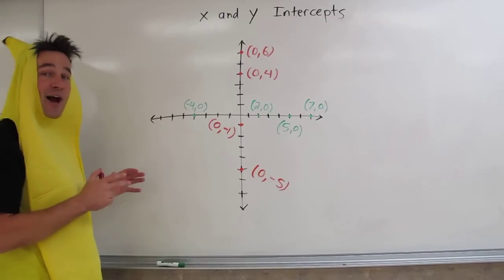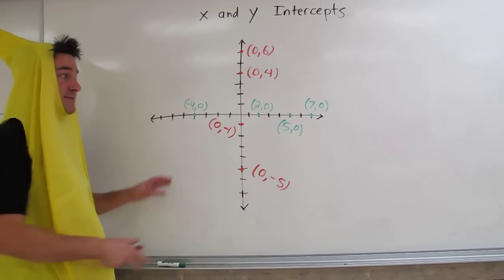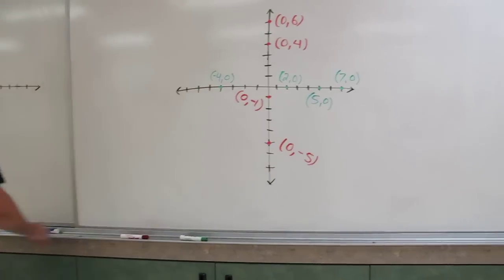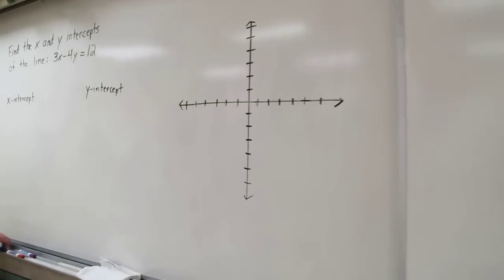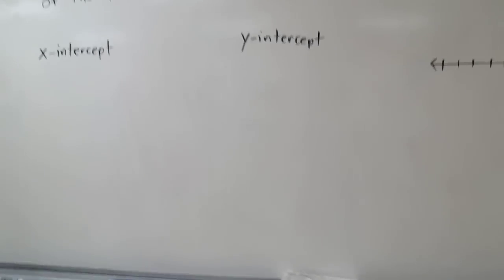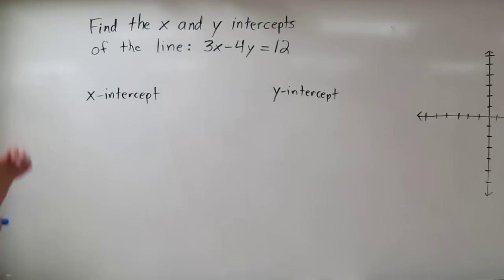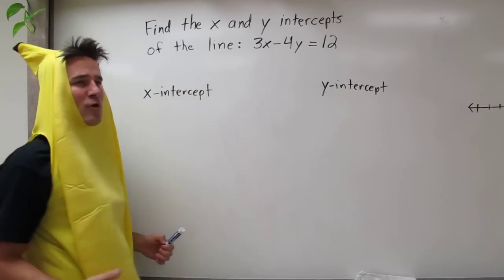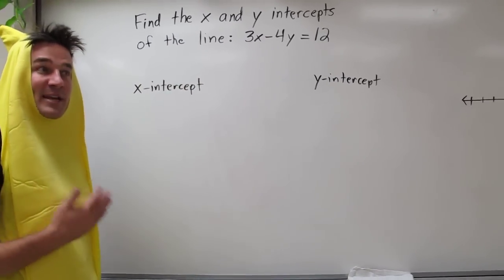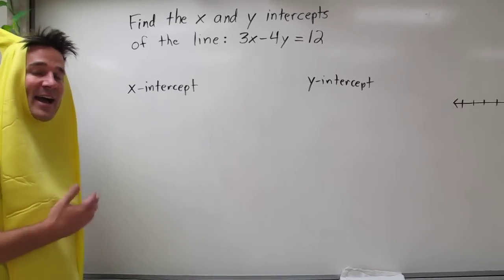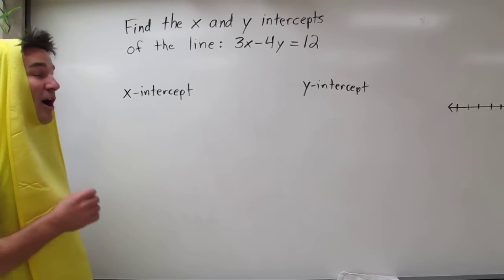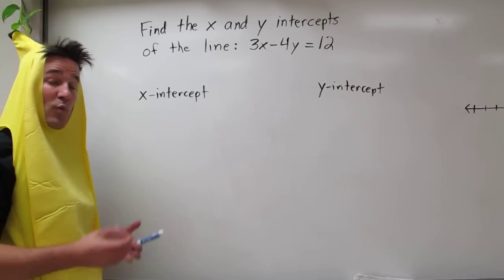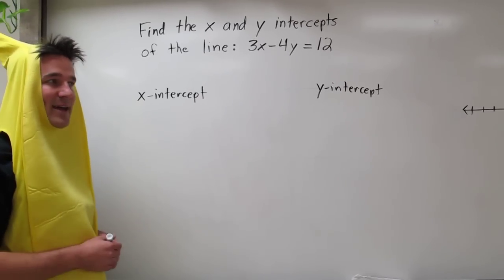And that's going to be helpful in finding x- and y-intercepts when we don't have a graph to work with. Here we have to find the x- and y-intercepts of the line 3x minus 4y equals 12. There's going to be a line that crosses the x- and y-axis, and our job is to figure out exactly where it crosses — what is the x-intercept and what is the y-intercept?